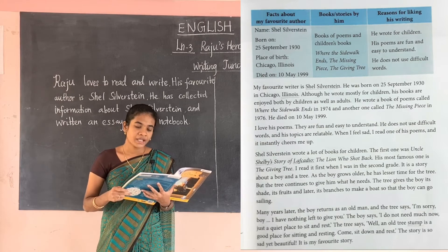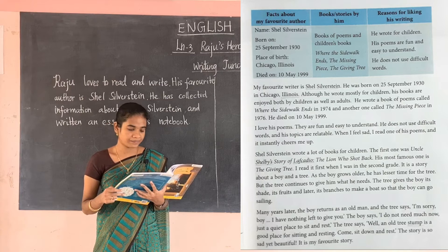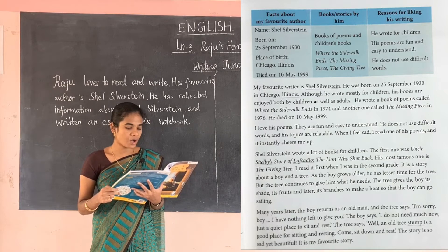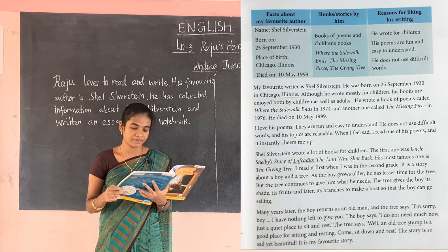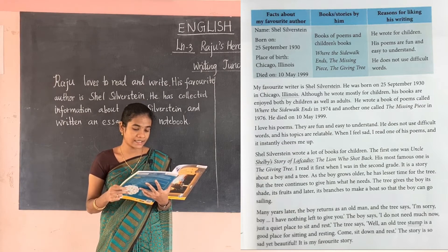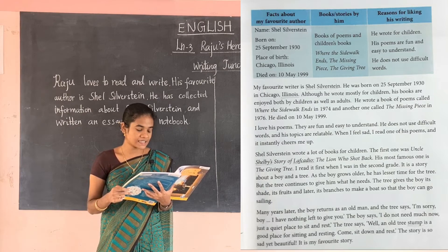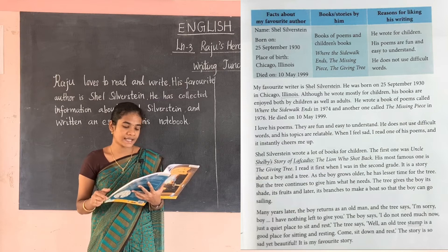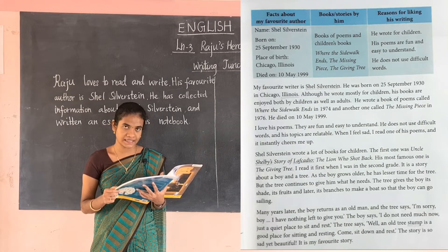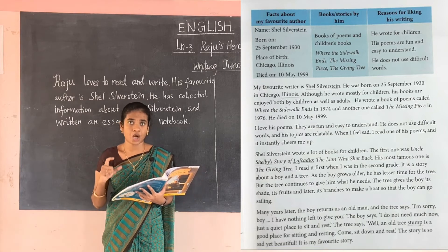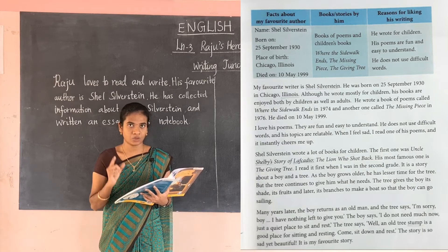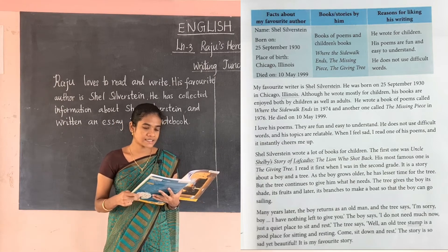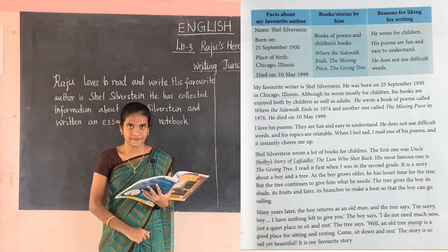Now let's go to the passage. My favorite author is Shel Silverstein. He was born on 25th September 1930 in Chicago, Illinois. Although he wrote mostly for children, his books are enjoyed both by children as well as adults. He wrote a book of poems called Where the Sidewalk Ends in 1974, and another one called The Missing Piece in 1976. He died on 10th May 1999. This paragraph gives a brief introduction about the author — where he was born, what poems he wrote, and when he died.